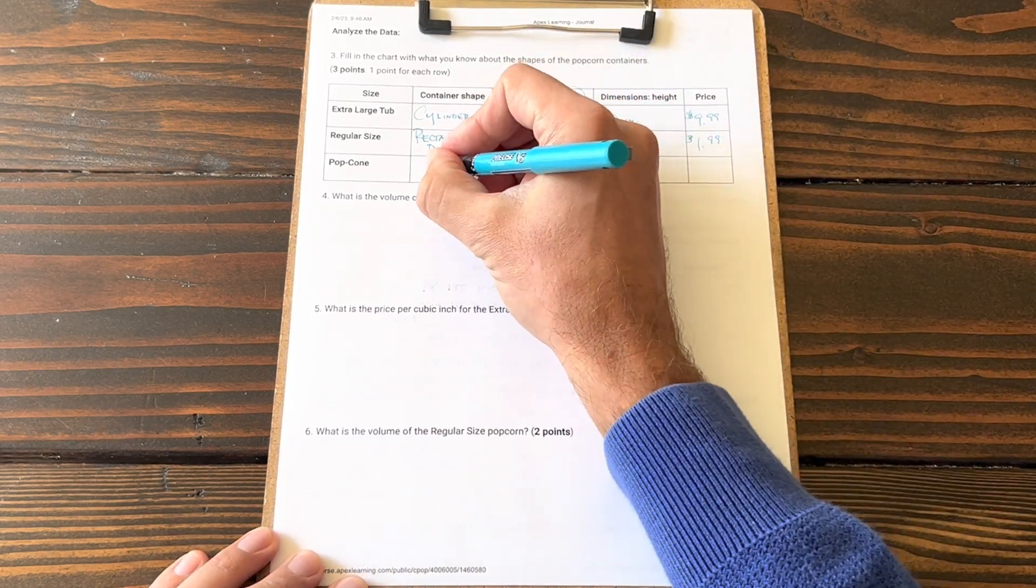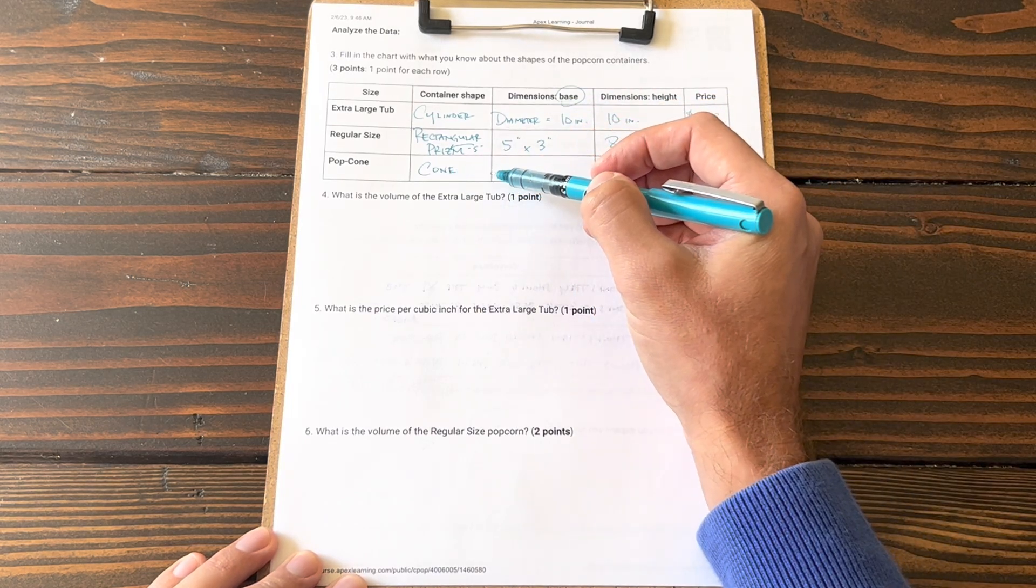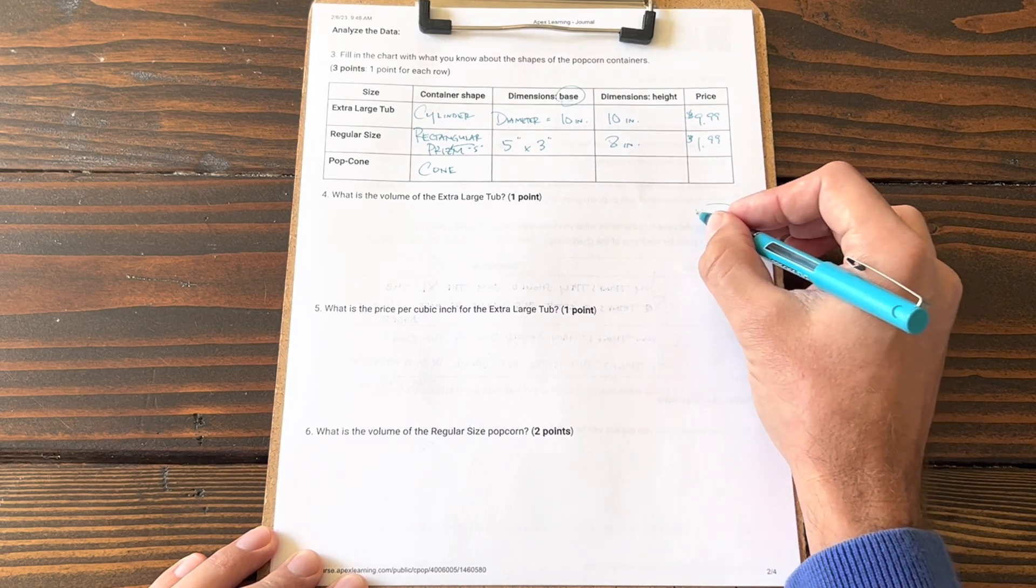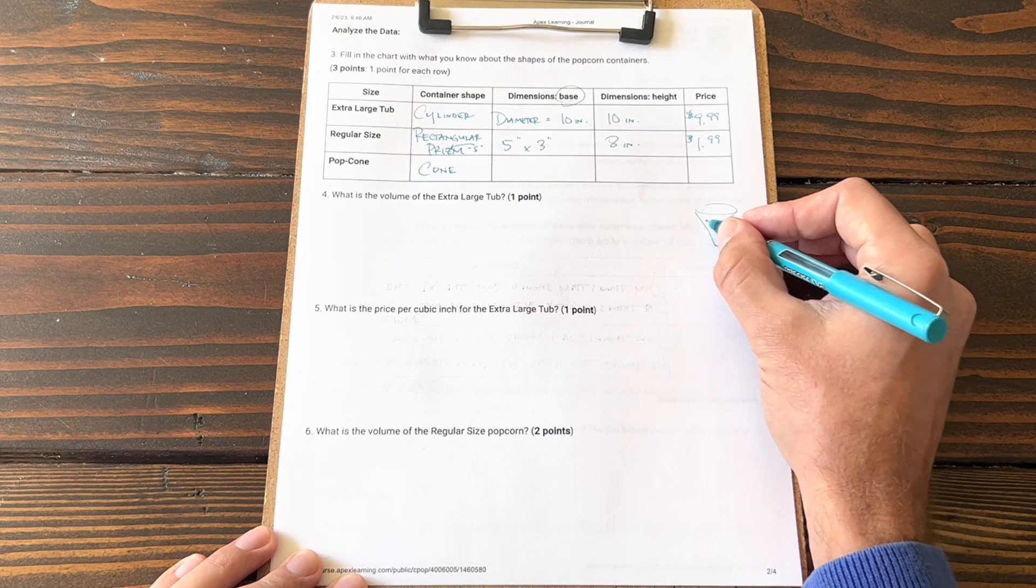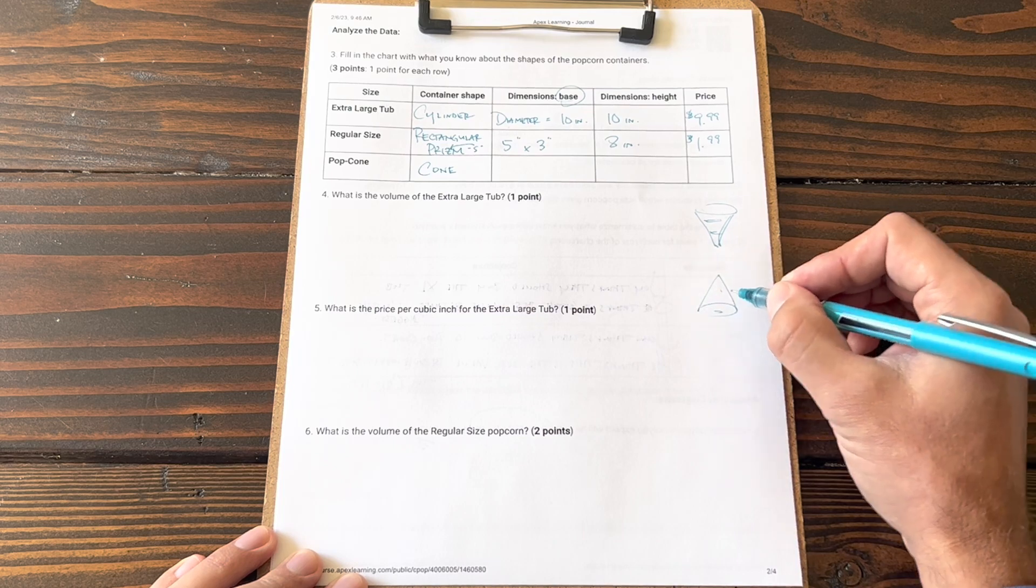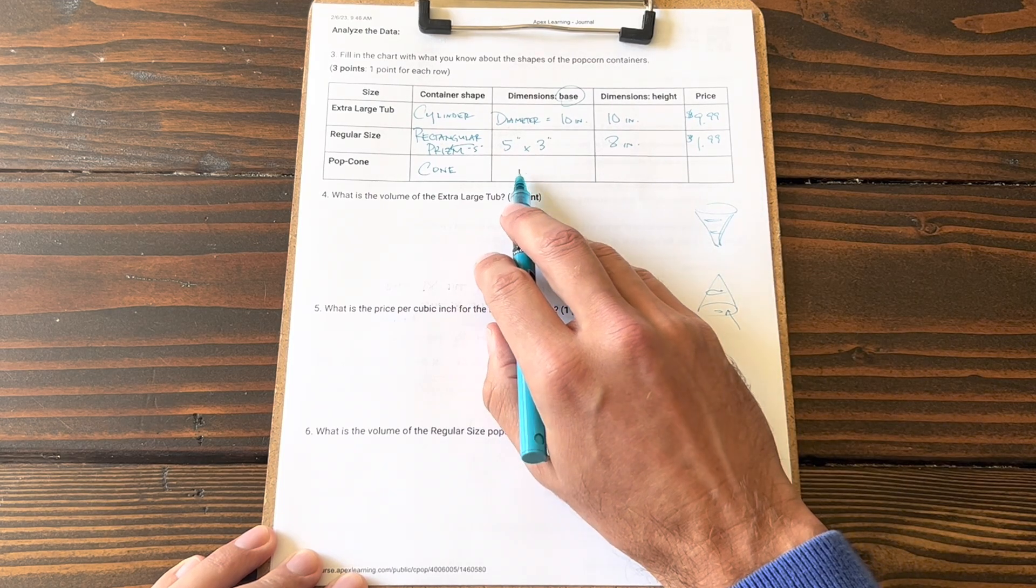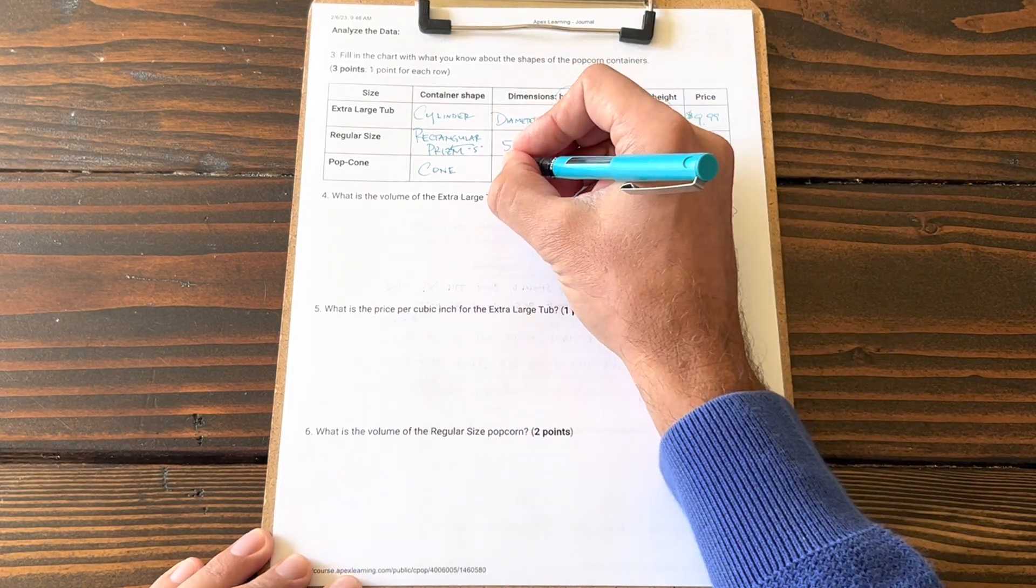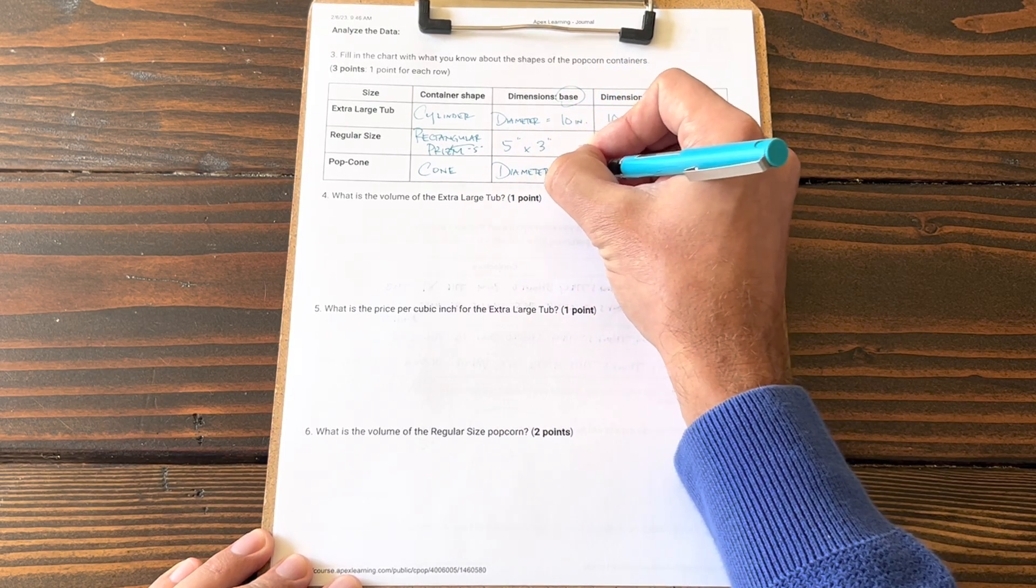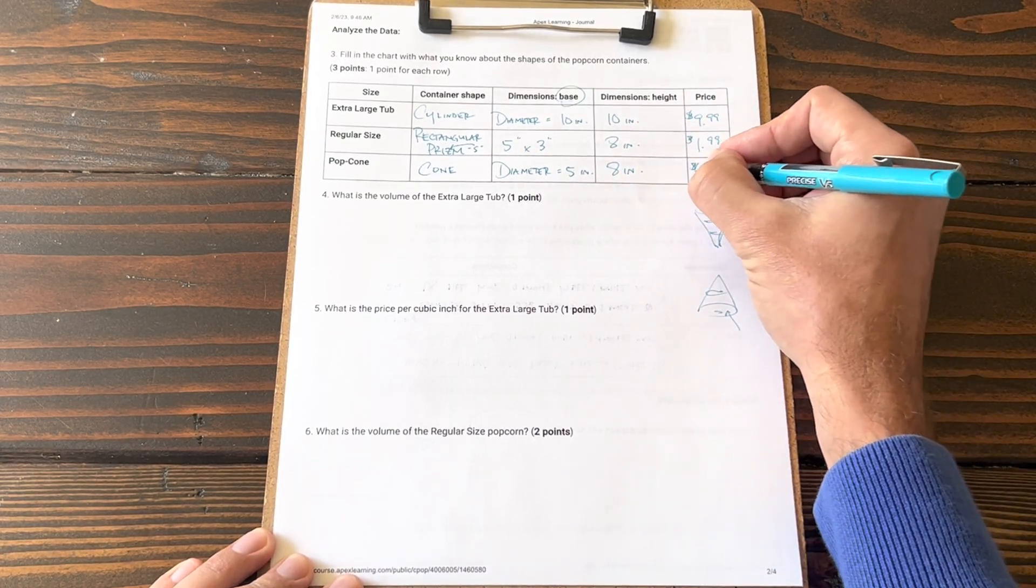Popcorns: the container shape will be a cone. The shape of the base is also a circle. If you can think of a cone, what they're referring to is the cone is going to look something like this, and if you flip it around or upside down, same thing. So the base being circular, they told us that the cone has a diameter of 5 inches. Height of the cone is also 8 inches. Price of the cone is 99 cents.